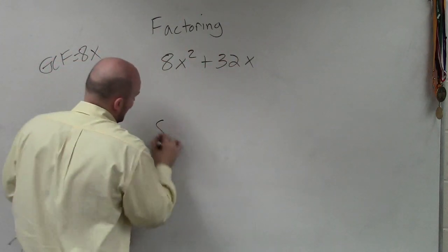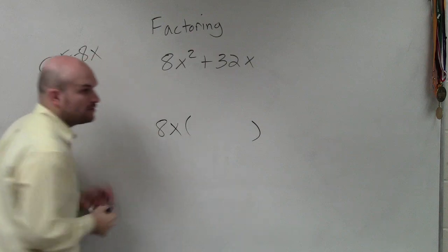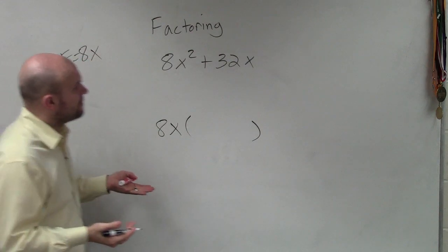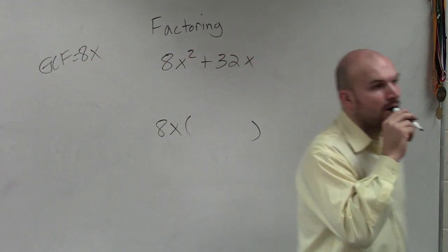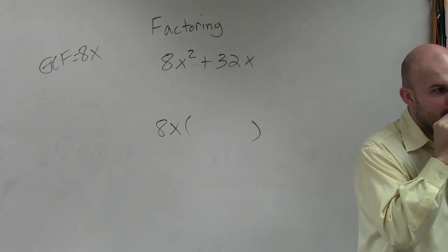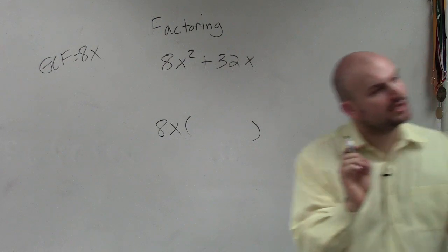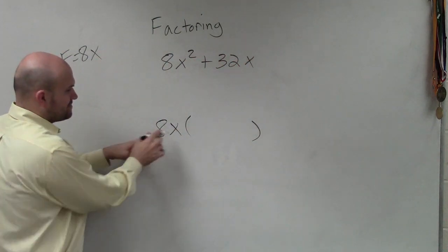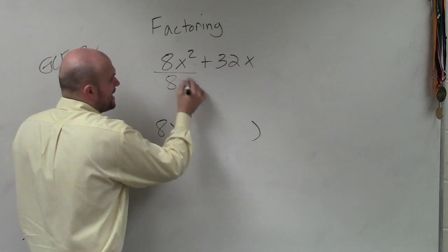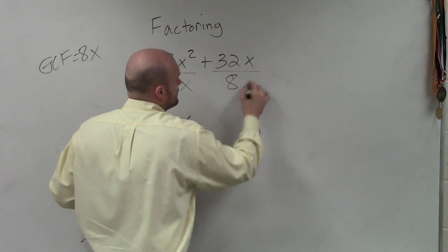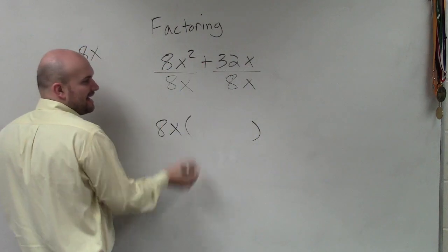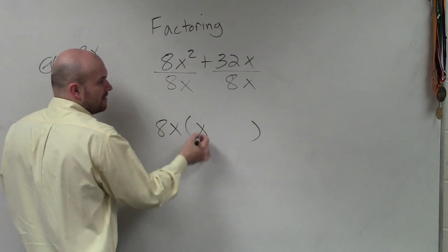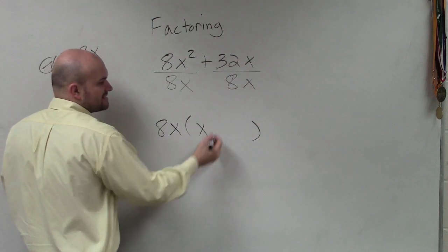So again, what I'm going to do is 8x times what is my quotient? Yes, Crystal. Quotient is what you're dividing by, right? Quotient is your answer. I haven't divided it yet. Here's my GCF. If I divide it by 8x, 8x squared divided by 8x is x, 32x divided by 8x is 4.